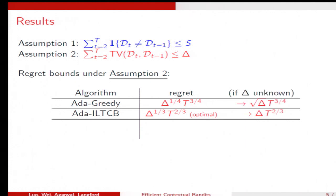We still design some algorithms that can run when delta is unknown. But you can see that the dependence on delta becomes bad. And the key difference between these two bounds and these two bounds are that the exponents here sum to one, but the exponents here sum to something larger than one. And this is not good.